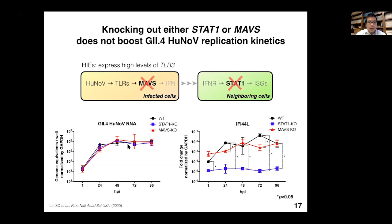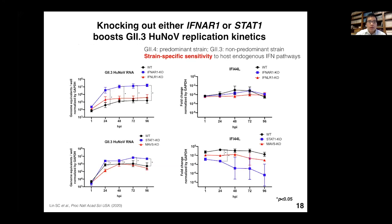We then considered whether this was GII.4-specific and tried GII.3. Unlike GII.4, we saw strong strain-specific sensitivity to the host innate interferon response. When we used GII.3 to infect type 1 interferon receptor knockout, type 3 interferon receptor knockout, STAT1 knockout, or MAVS knockout enteroids, we saw improved replication in type 1 interferon receptor knockout and STAT1 knockout lines. So unlike GII.4 which showed no change, GII.3 infection is genuinely sensitive to the host innate interferon response—when we use CRISPR to knock out that response, we can successfully enhance GII.3 replication.